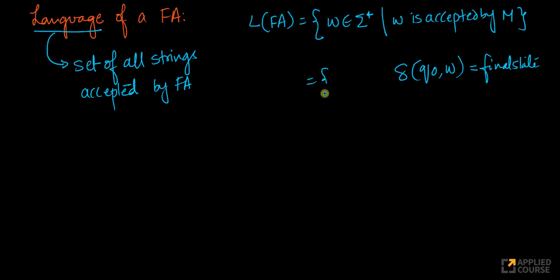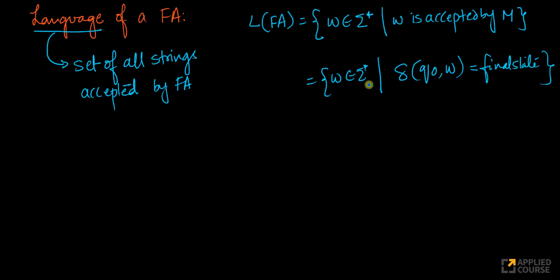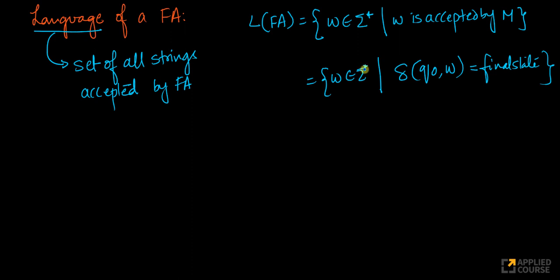You can also write this as a set of those words that belong to sigma star such that this condition is valid. This is another way of writing the same thing — a very simple concept. Now let's look at some examples to understand this better.